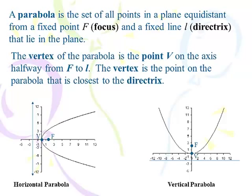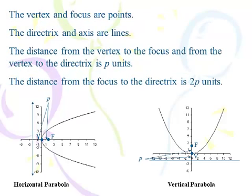The vertex of the parabola is the point V on the axis halfway from the focus to the directrix. The vertex is the point on the parabola that's closest to the directrix, and that seems to be the point most people concern themselves with. It is a point on the curve, whereas the focus is not. The vertex and the focus are points; the directrix and the axis are lines. The distance from the vertex to the focus and from the vertex to the directrix is P units.